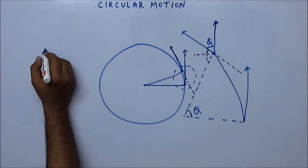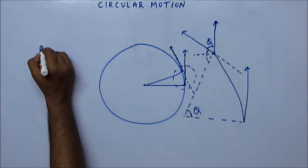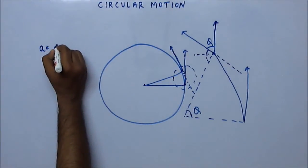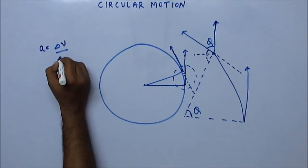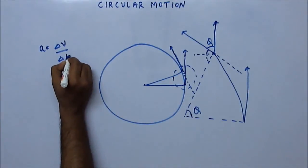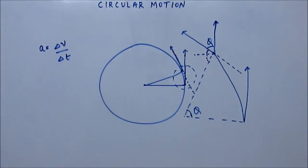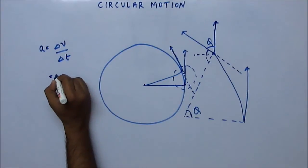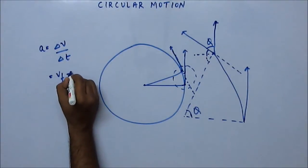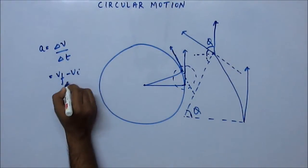Now, the basic definition of acceleration: acceleration is change in velocity divided by the time taken for that change to happen. Change in velocity is always final velocity minus initial velocity.